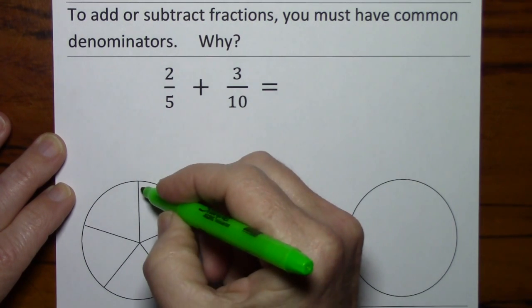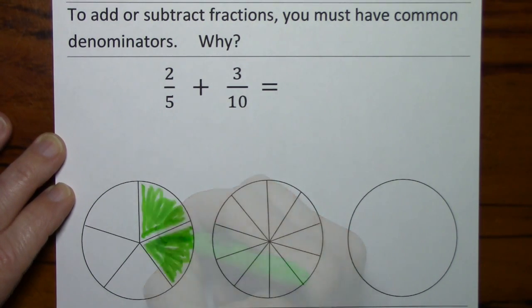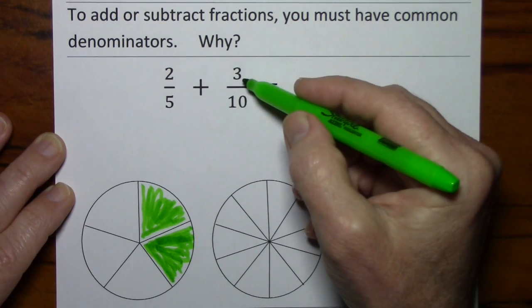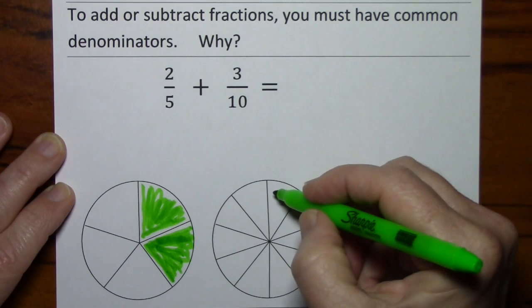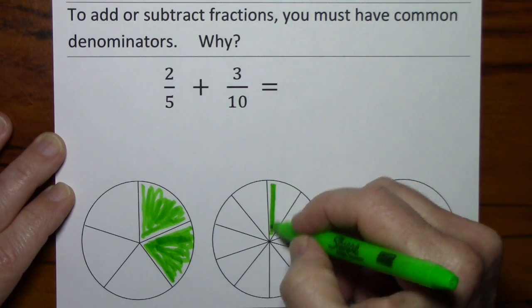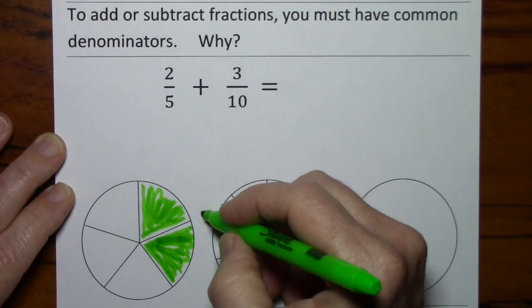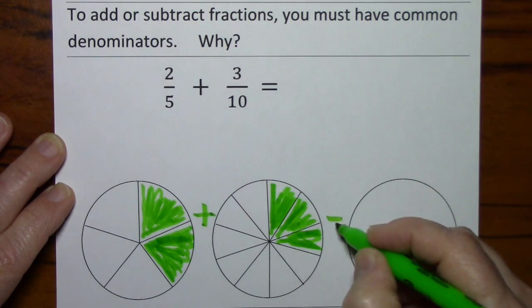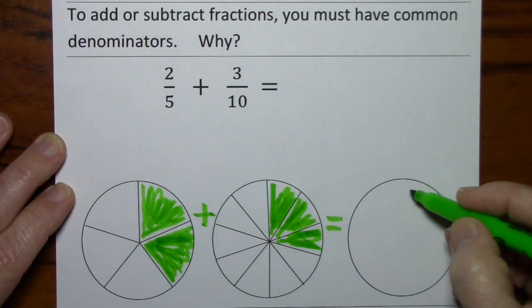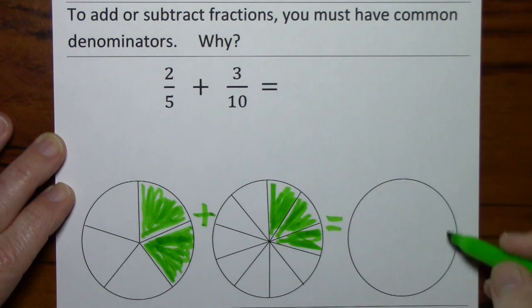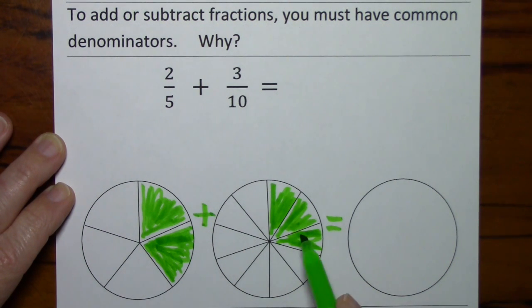2 fifths will be represented as 2 out of 5, and 3 tenths will be represented as 3 out of 10. But if we try to add them and show what we've got, we don't know how many slices to fill in. We don't know how many slices we have. This is in tenths, this is in fifths.